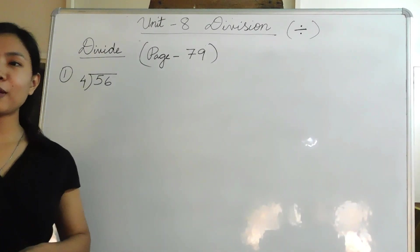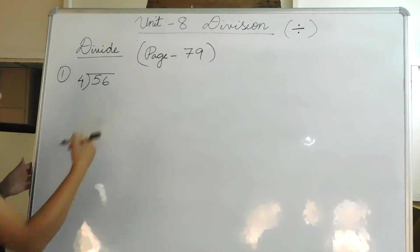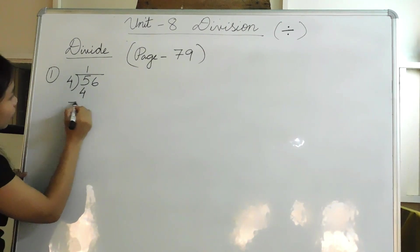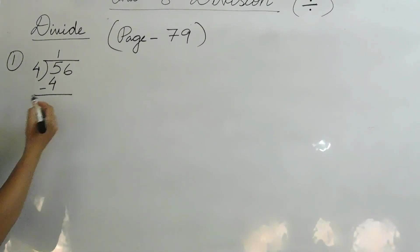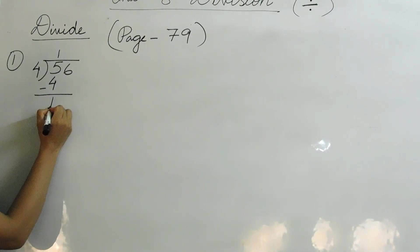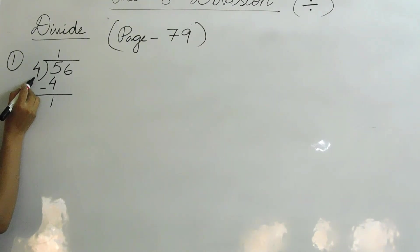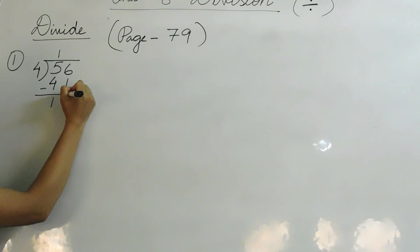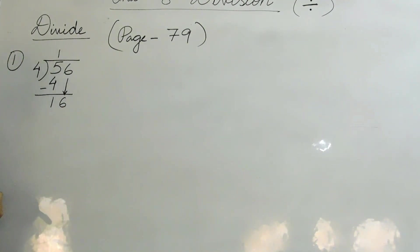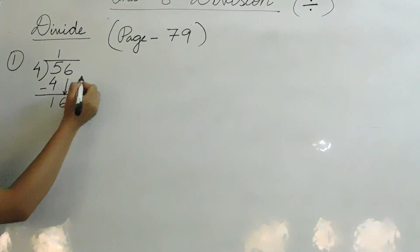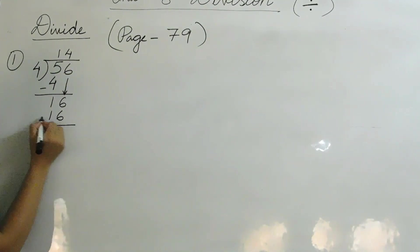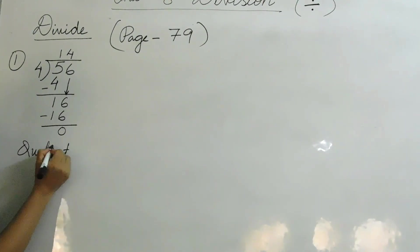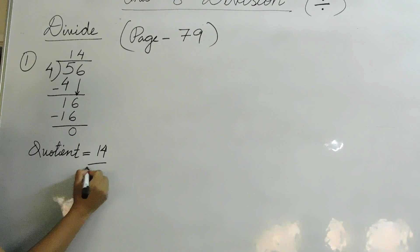Now let's learn dividing by a 1-digit number, on page number 79: 56 divided by 4. Always start dividing from the left. 4 one time is equal to 4. 5 minus 4 is 1. Now 1 is smaller than the divisor, that is 4, so we cannot divide 1 by 4. We bring down 6, so the number becomes 16. 4 how many times is equal to 16? 4 four times is equal to 16. 16 minus 16 is equal to 0. So the quotient is equal to 14.